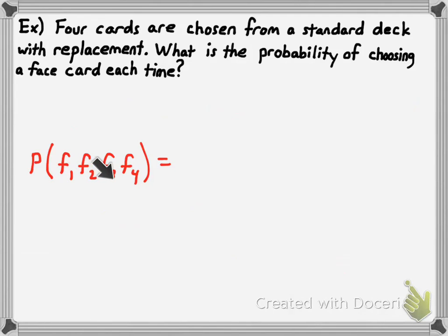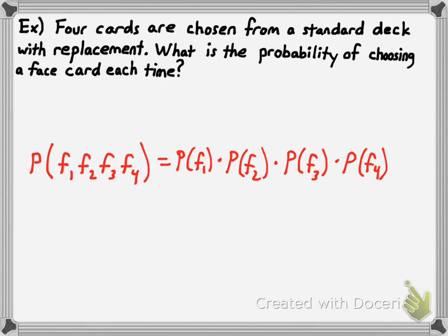Are these independent events? Yes — since you're putting the card back because of replacement, each draw is independent of the prior draw. So we can do P(F₁) × P(F₂) × P(F₃) × P(F₄). We need to find the probability of getting a face card on each individual draw. Since it's a standard deck, there are 52 cards. Face cards are kings, queens, and jacks — four of each — giving a total of 12 face cards in the deck.